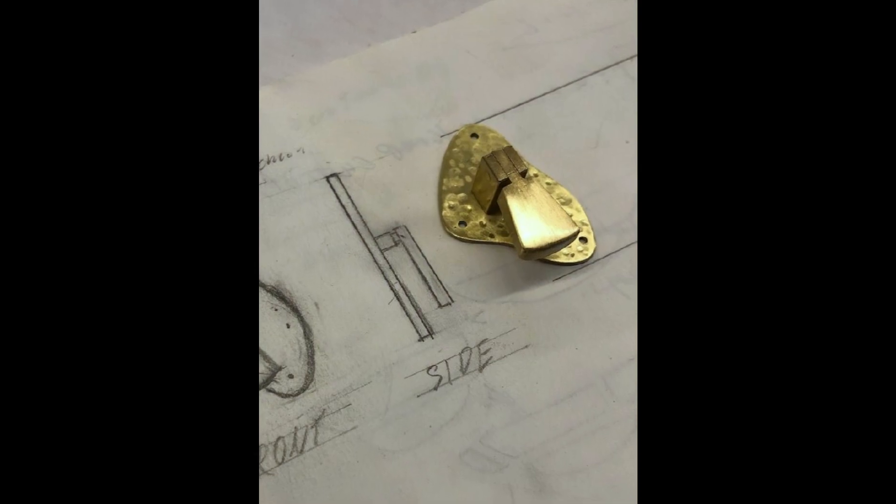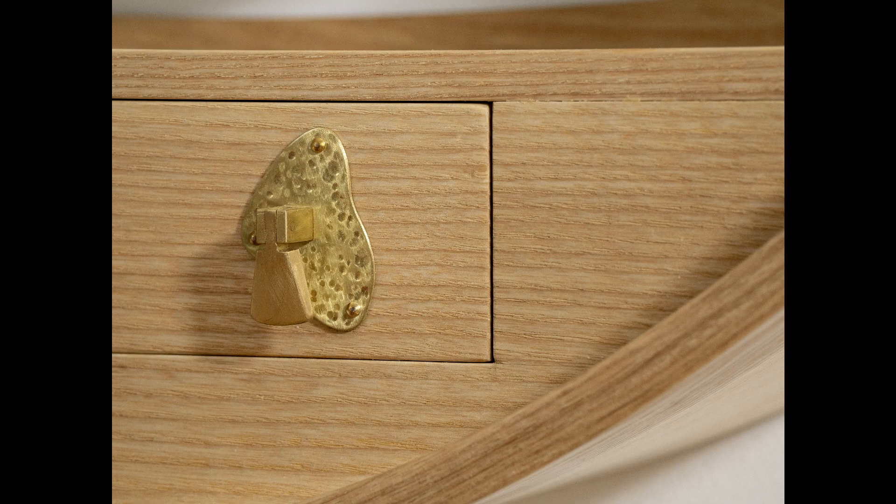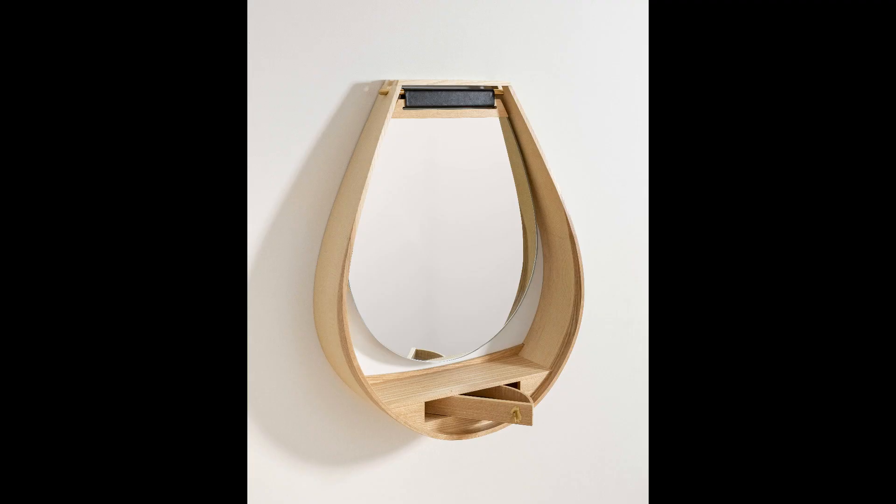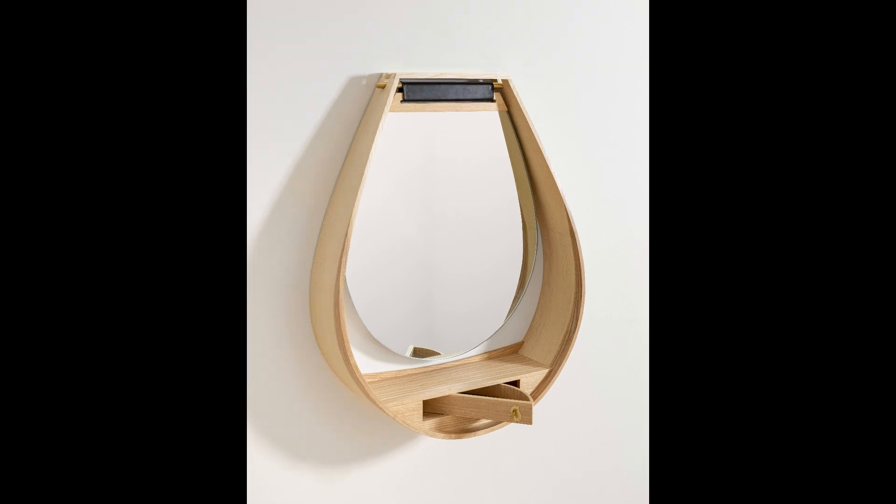He cut out and hammered and finished the escutcheon plate, but there was some really fine precision machining involved in making this tiny drawer pull. If you want to see the full video of the construction process, it'll be linked below.